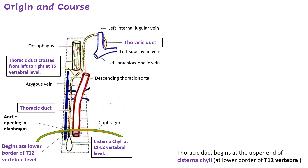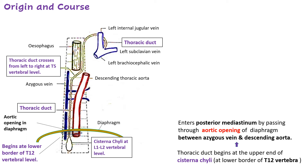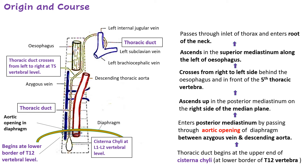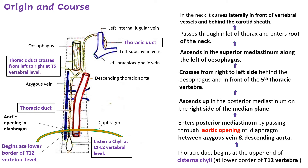To recap: the thoracic duct begins at the cisterna chyli at the T12 vertebral level, enters the posterior mediastinum through the aortic opening of the diaphragm between the azygos vein and descending aorta, and ascends on the right side of the median plane. It then crosses from right to left behind the esophagus at the upper border of T5, ascends in the superior mediastinum to the left of the esophagus, passes through the inlet of the thorax into the root of the neck, and curves laterally with vertebral vessels behind it and the carotid sheath in front.